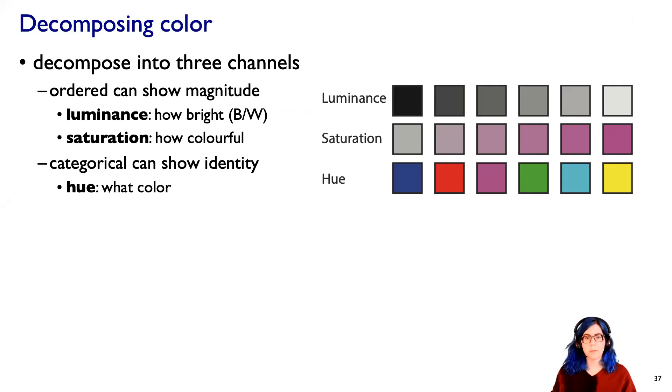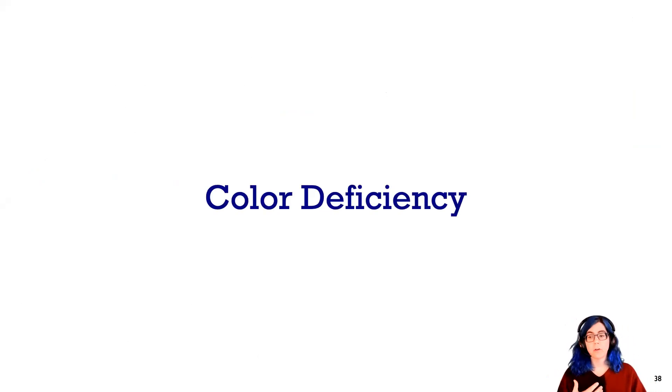Let's think a little bit more about what happens with these three channels, and we're going to think about this in the context of what people often call color blindness. Technically it's color deficiency — not that people can't see any color at all, but that they see fewer colors than color-normal people.